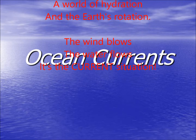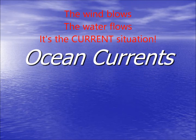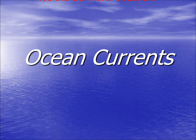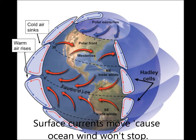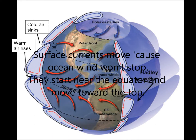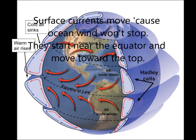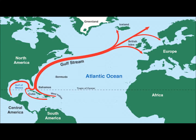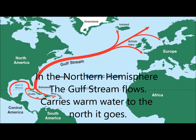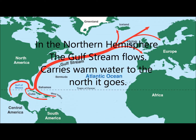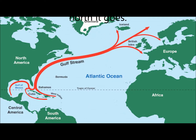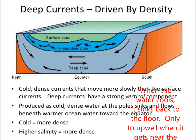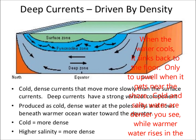The wind blows, the water flows — it's the current situation. Surface currents move because ocean wind won't stop. They start near the equator and move toward the top. In the northern hemisphere the Gulf Stream flows, carries warm water to the north it goes. When the water cools it sinks back to the floor, only to upwell when it gets near the shore.